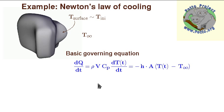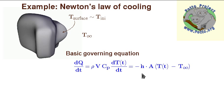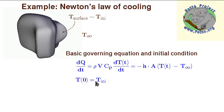We will use energy conservation to write the governing equation: the mass rho times volume V, times the heat capacity, times the temperature difference, divided by some time it will take for this energy to transfer. This energy has to be absorbed by the surrounding, which is h, the convection coefficient, times the area, times the temperature difference. The initial condition will be T at time equal to zero equals T-initial.